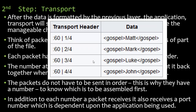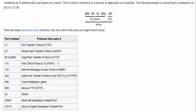So for our example with Matt, Mark, Lucas, and Jonathan, we can see there are four chunks — four packets — and they're all using port 60. A socket is an IP address combined with a port number, and there are various port numbers for each protocol and the application that uses it.